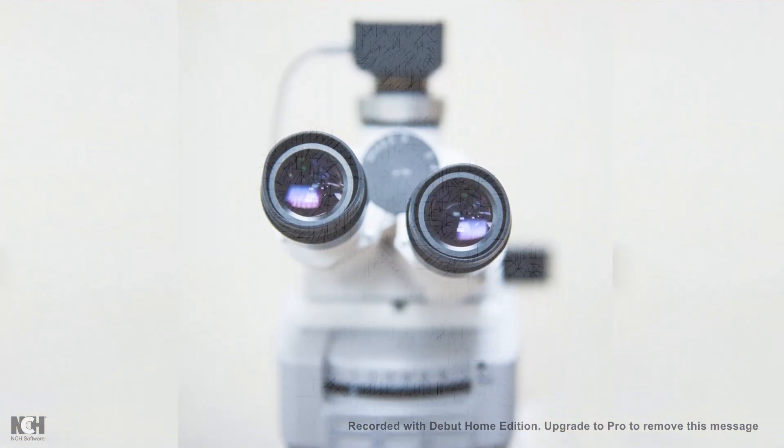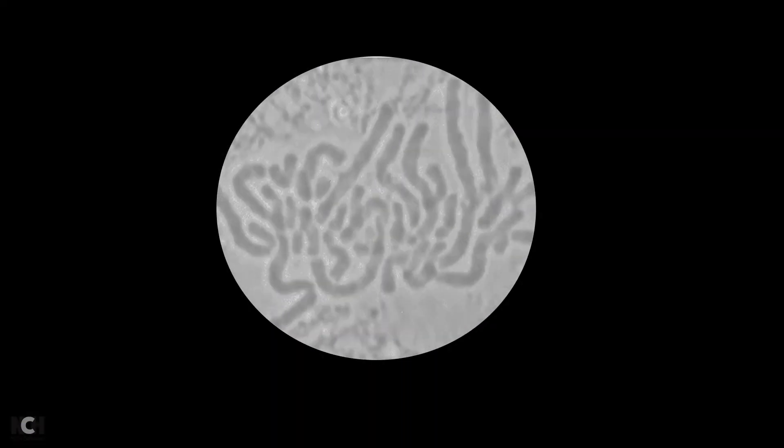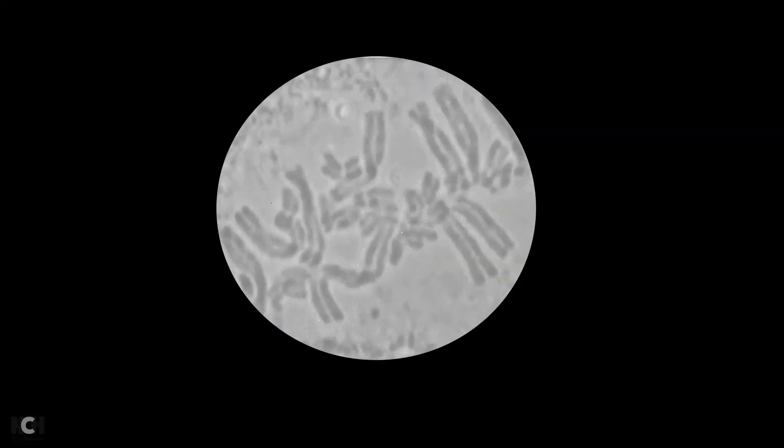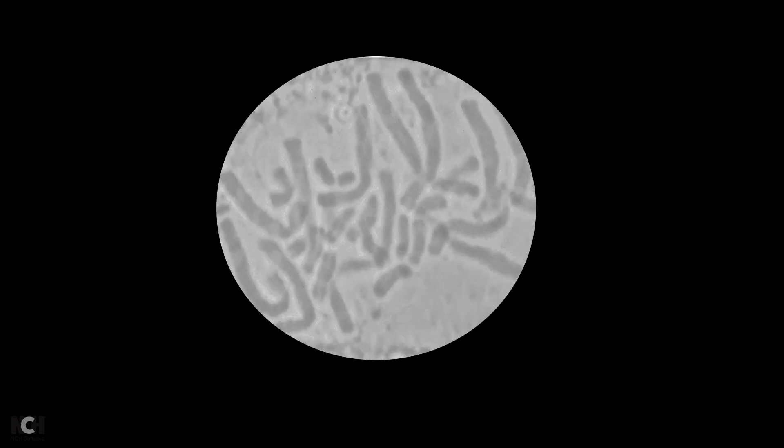Looking through the microscope, we see a live movie where the chromosomes are segregated in the metaphase plate and are separated and going to the two separate poles.